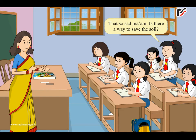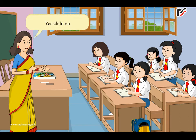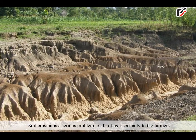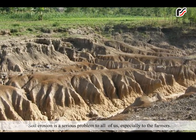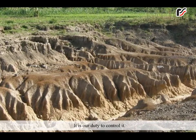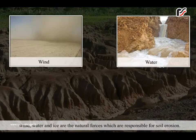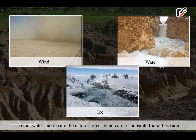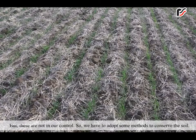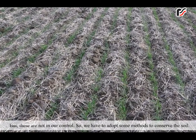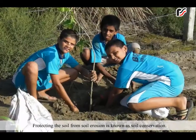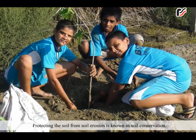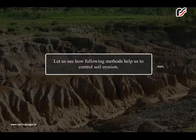That is so sad, ma'am. Is there a way to save the soil? Yes, children. Soil erosion is a serious problem to all of us, especially to the farmers. It is our duty to control it. Wind, water and ice are the natural forces which are responsible for soil erosion. But these are not in our control. So we have to adopt some methods to conserve the soil. Protecting the soil from soil erosion is known as soil conservation.